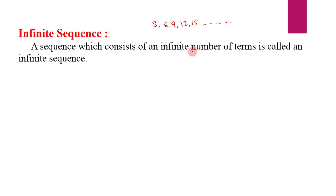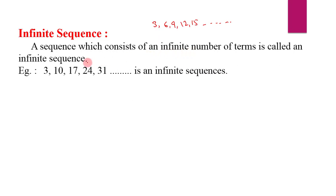Let us see another example: 3, 10, 17, 24, 31 and so on. This sequence continues infinitely — we do not know where it ends, so it is said to be an infinite sequence.